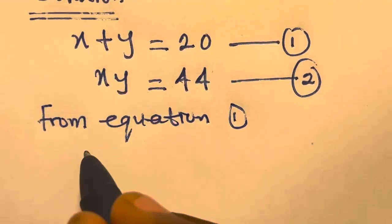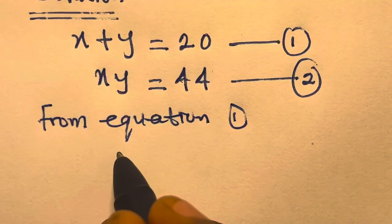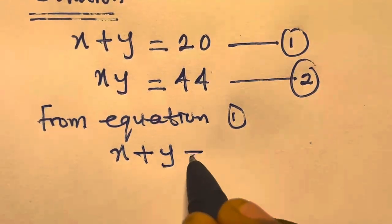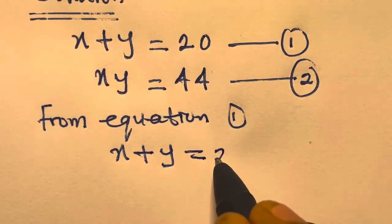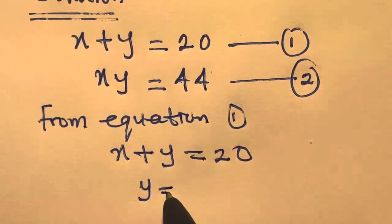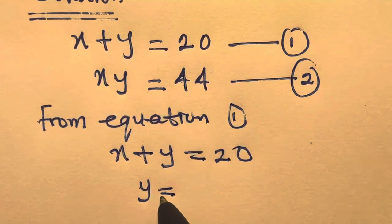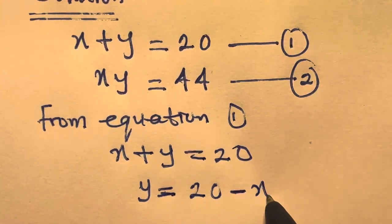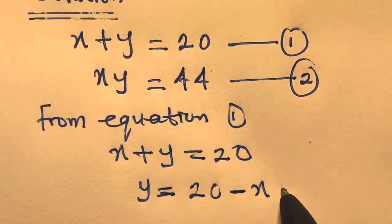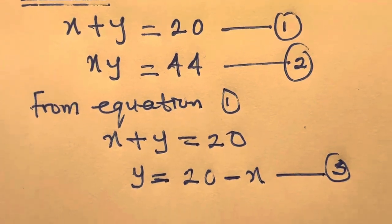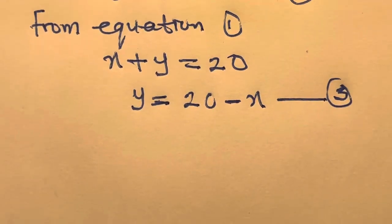From equation 1, we have x plus y equals 20. So if we make y the subject of the formula here, we have y equals 20 minus x. Let's number this equation 3.